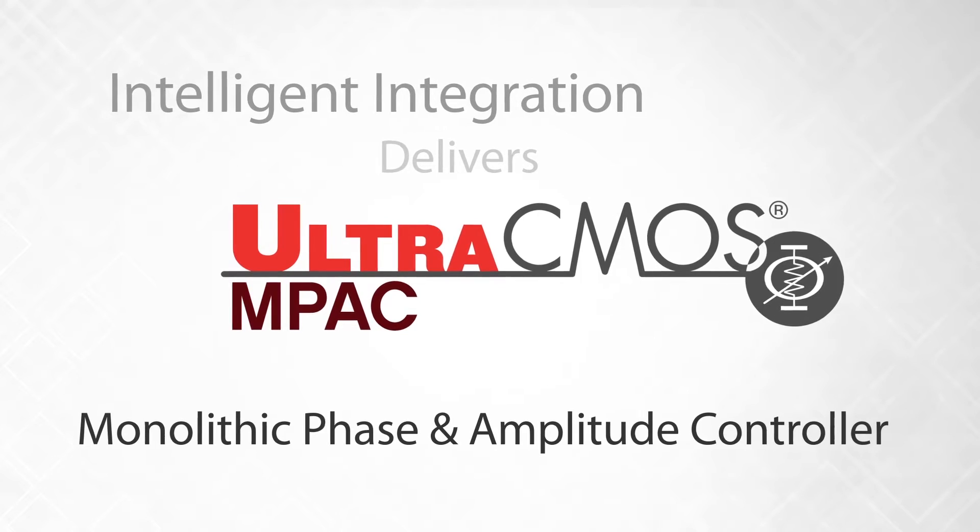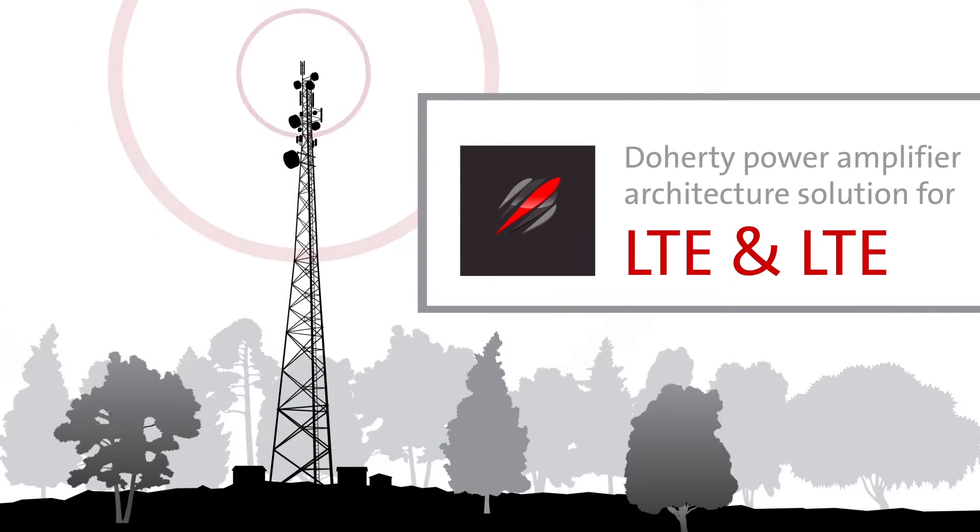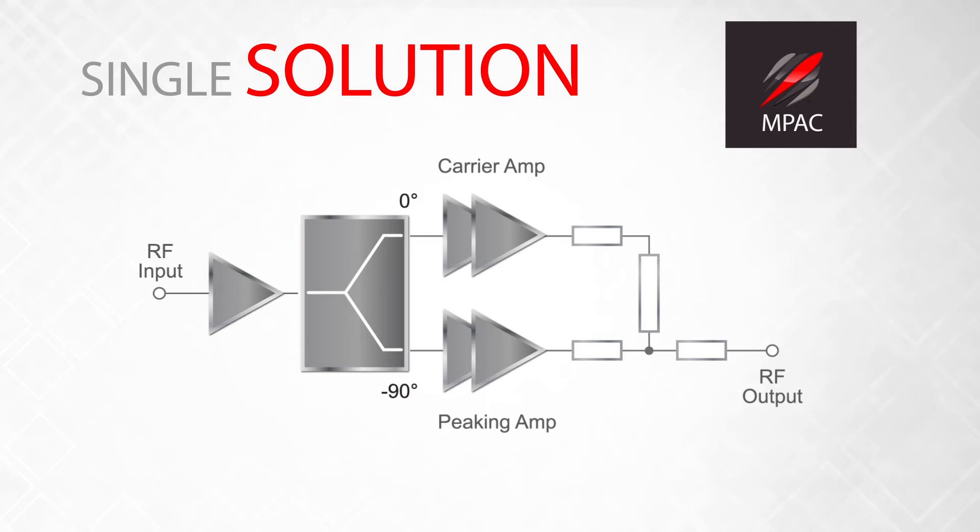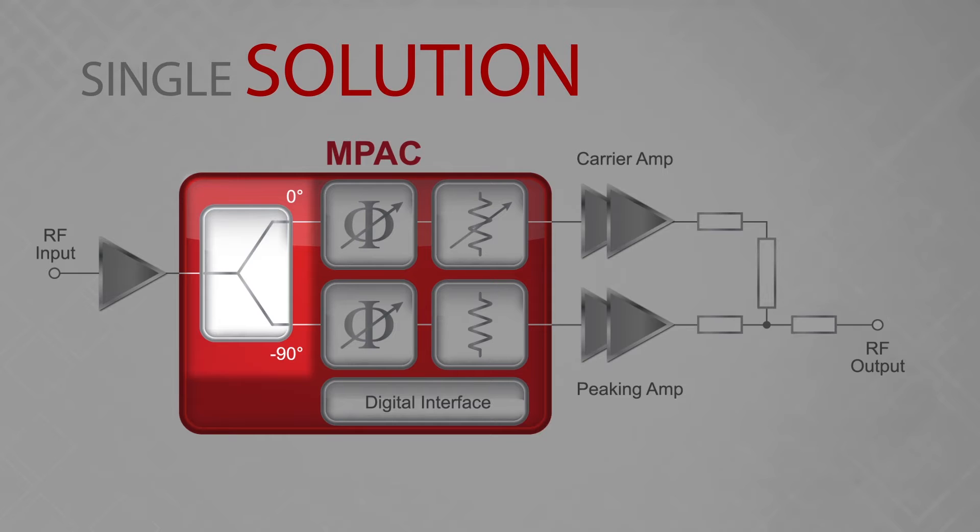Later, we released our monolithic phase and amplitude controller, a single-chip digitally controlled solution used to optimize the performance of a Doherty power amplifier architecture. A single device which incorporates maximum phase and amplitude tuning flexibility for the carrier and peaking path with an integrated 90-degree splitter.